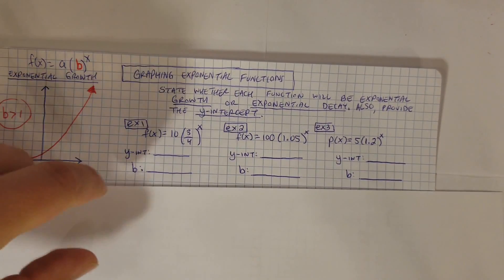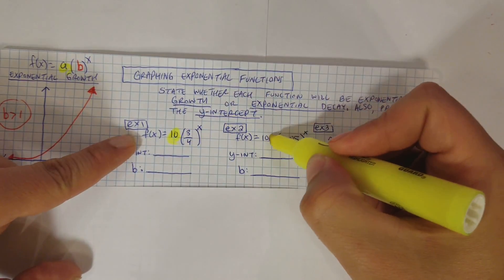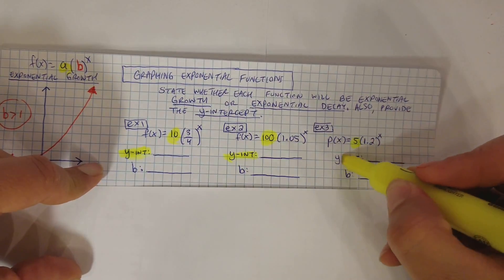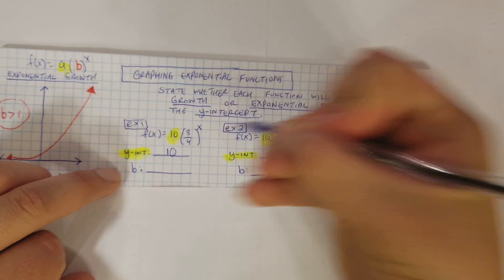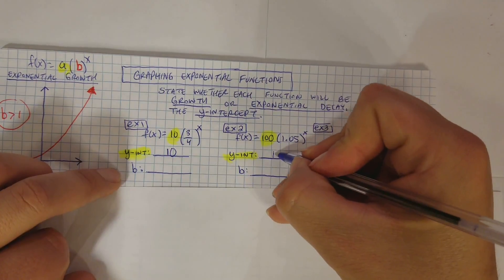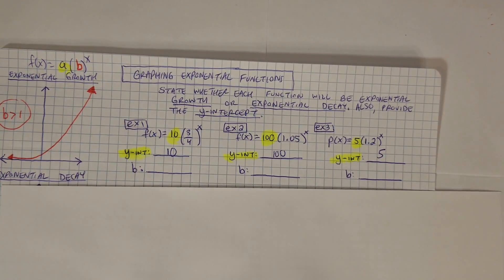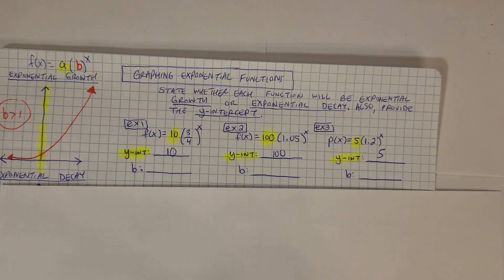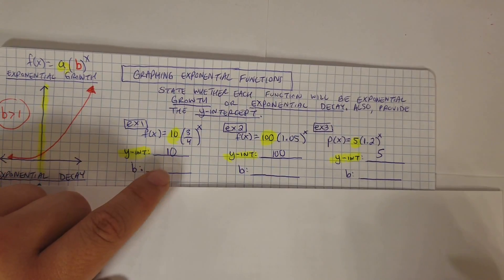The y-intercept, or the value of a, is the number that's in front. The y-intercept for the first one will be 10, the second one will be 100, and the third one will be 5. So the number in front is the y-intercept where it touches the y-axis. B is the number that is inside the parentheses, under the x — sometimes they don't have parentheses.